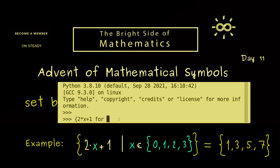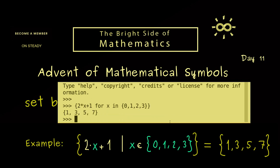And then we just type x in the set {0, 1, 2, 3} curly brackets. Okay, now I hit enter and you see the result. So not so surprising, we get the same odd numbers we calculated before.